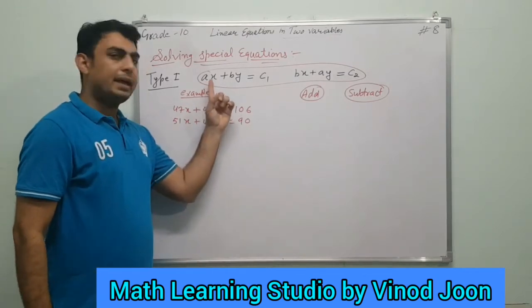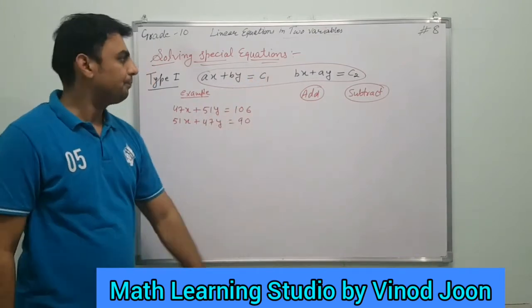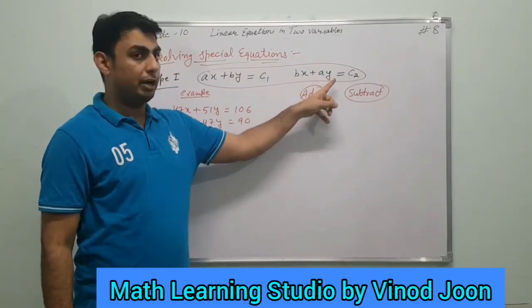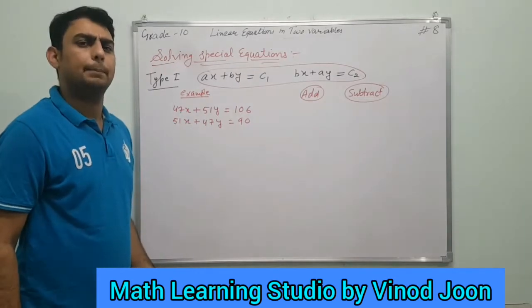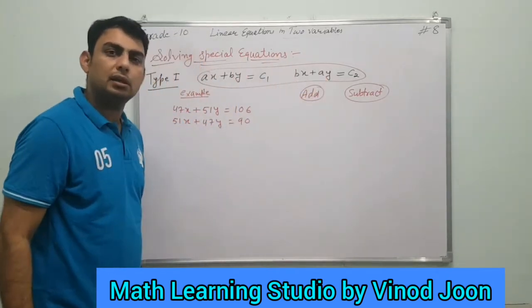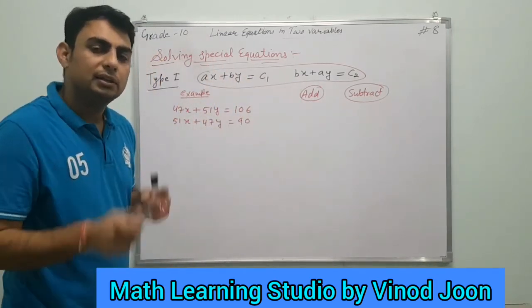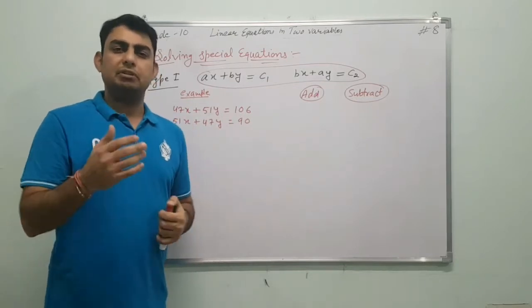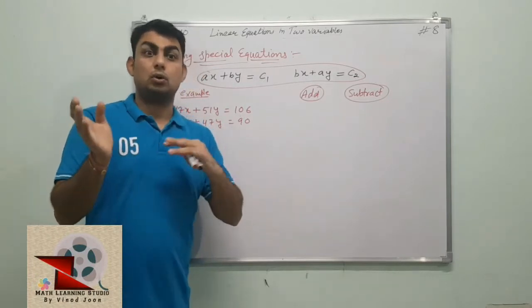Type 1: Sometimes we may be given equations of these types. If you have ax + by = c1, and the second equation bx + ay = c2. The special thing is in the first equation x has coefficient a, here in the second equation y has coefficient a. In the first equation y has coefficient b, and in the second equation x has coefficient b. That is the special thing about it.